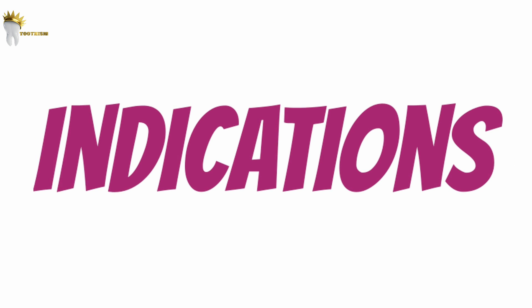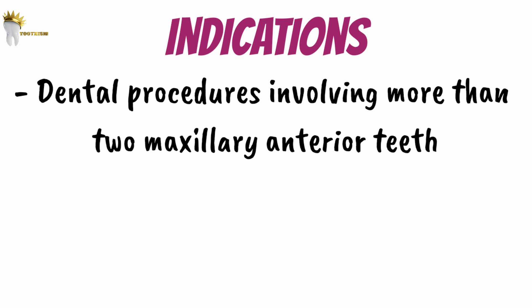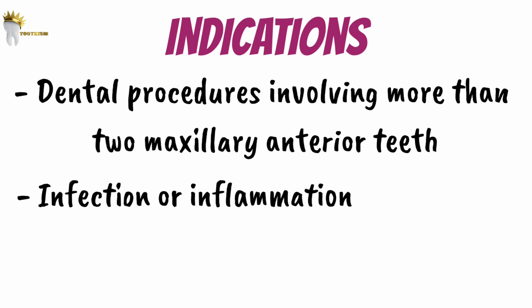As the infraorbital nerve is anesthetized in this block, this produces anesthesia of the lower eyelid and the lateral aspect of the nose and lips. The infraorbital nerve block is useful when we want to perform dental procedures on more than two maxillary anterior teeth and their buccal soft tissues. When there is infection or inflammation, we can't give local infiltration because it will not work, so in this case this block can be given.